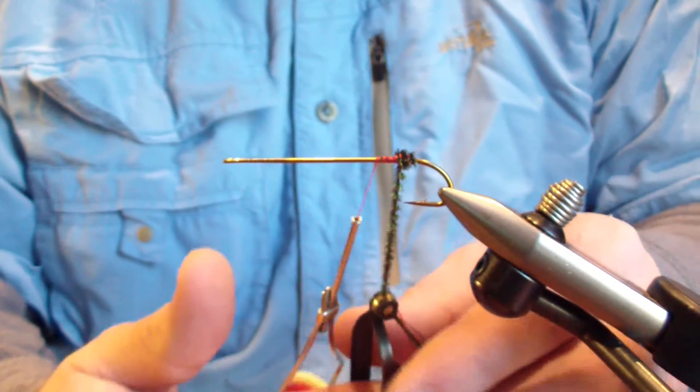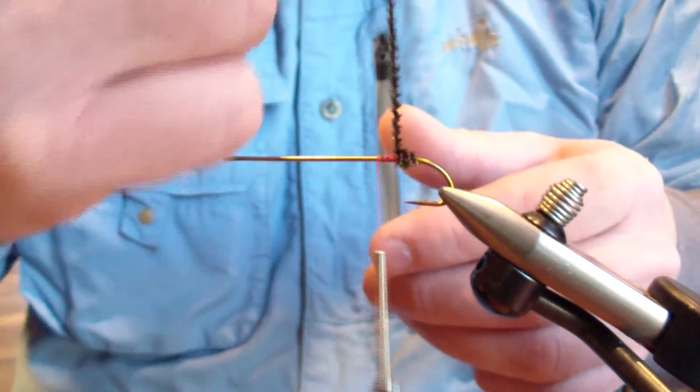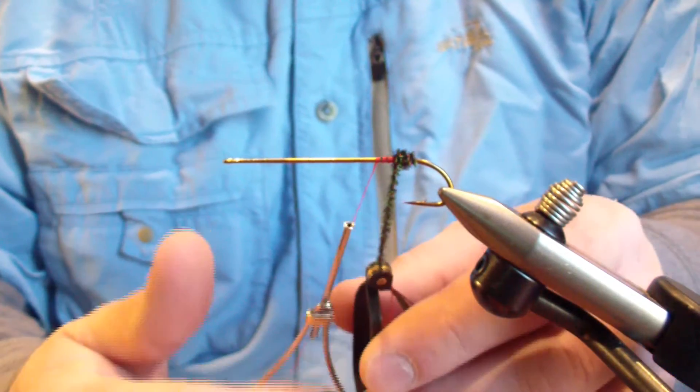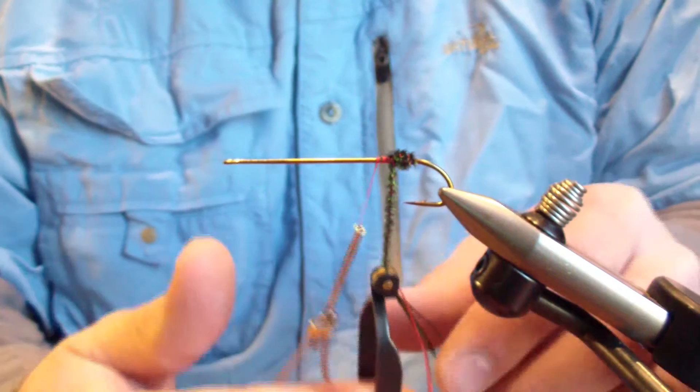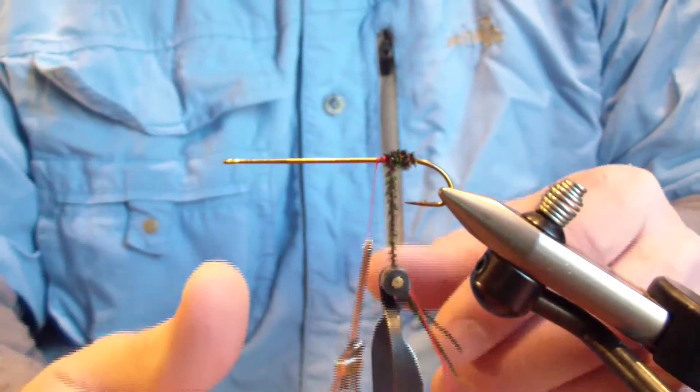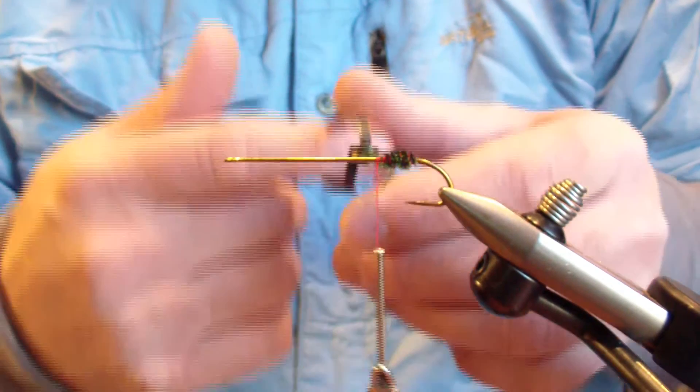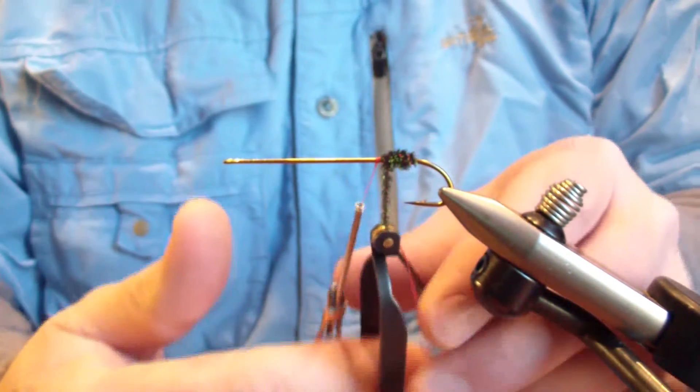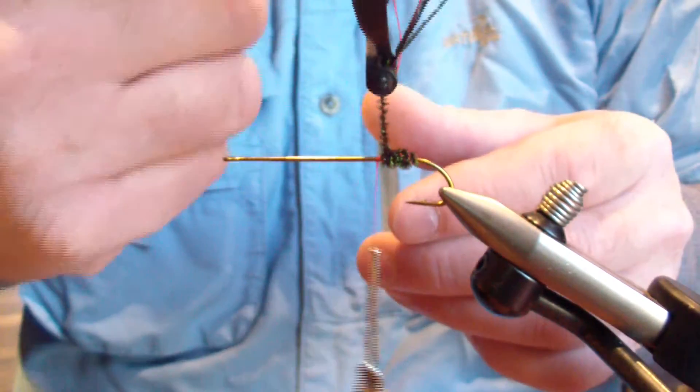When you're spinning with hackle pliers you're actually at times applying a reverse turn sometimes. If you use your tool, if you keep the shepherd's hook on it, you'll have to add a few more turns as you go. But you're just going to wrap evenly, forward, one in front of the other.